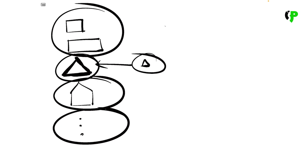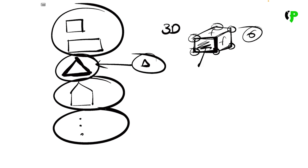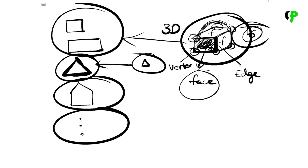We also have 3D shapes. In 3D, we have a square — that cube. Here we have a 3D shape, a cube. We have a rectangle — this side is a rectangle. This is an edge, this is a vertex. So we have surfaces.